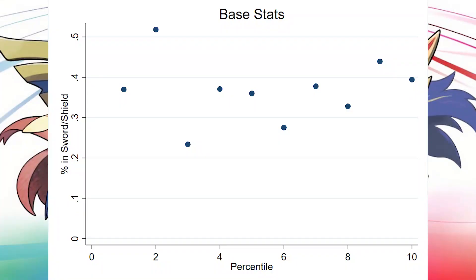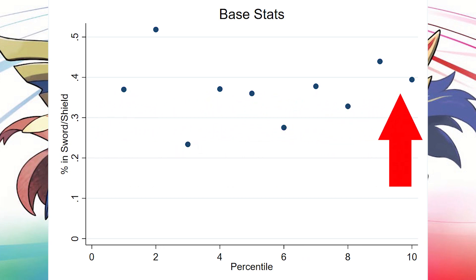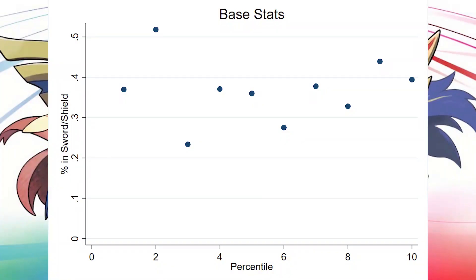First, let's check the battle system. The way we're going to test this is with base stats — the base stats reported on Bulbapedia. I collected those for each Pokemon and broke them into percentiles, with 10 percentiles total. We can see across the percentiles that it's pretty balanced; there's an even proportion of each percentile represented. There's some variation, but we're not seeing any sort of pattern in the base stats, which tells us the battle system is probably pretty balanced.